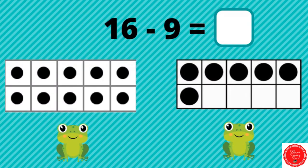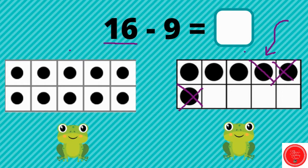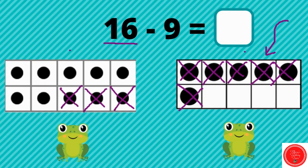Let's try another. Now we have 16 minus 9. 16 tells us what we're starting with: 10 and 6. How many do I need to take away? 9. Good. And we want to start with this one because this 10 frame is not complete. So I'm going to cross out 9: 1, 2, 3, 4, 5, 6, 7, 8, 9. Can you count how many we have left? Correct. There are 7 left. So 16 minus 9 equals 7.